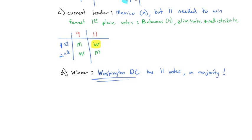This way, everybody's preference schedule is considered — not just your first place preference, but your second place preference being higher than third actually matters in the results. You might not get your number one pick, but you're more likely to get your number two pick with instant runoff voting. So at first glance, this seems like a much better option. But what could possibly go wrong?